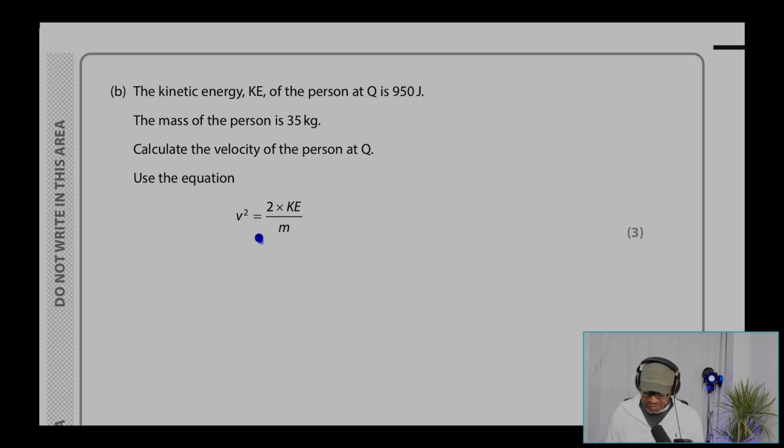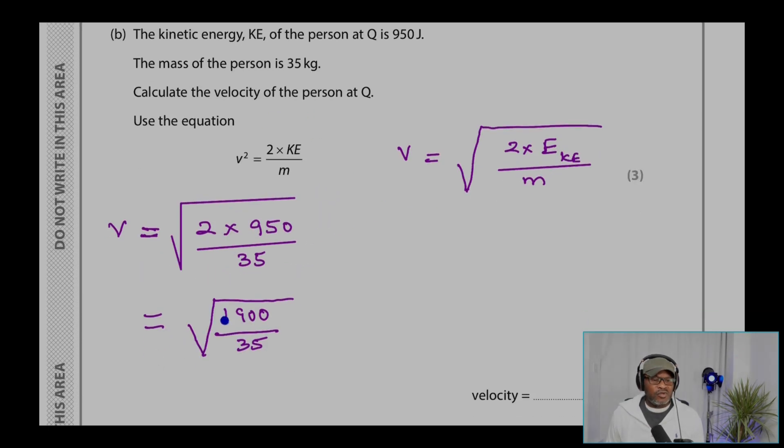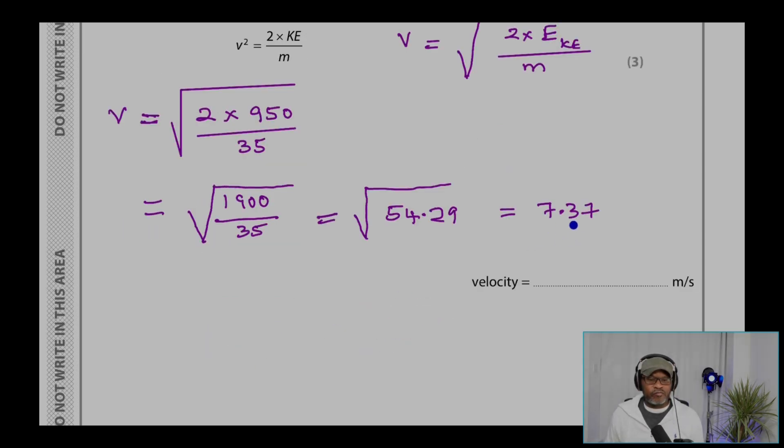We need to make V the subject. This is V squared, so we need to square root both sides. And therefore, V equals root 2 times energy Ke over M. We need to populate with the values: that's 2 times 950, that's Ke divided by 35 the mass. That gives root 1900 over 35, and that's root 54.29, that equals 7.37, that would be 7.4 meters per second for the velocity.